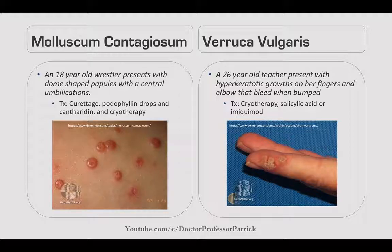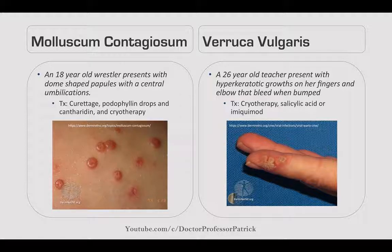Molluscum contagiosum: an 18-year-old wrestler presents with dome-shaped papules and central umbilications. Treat with curettage, podophyllin drops, and cryotherapy. Verruca vulgaris (warts): a 26-year-old teacher presents with hyperkeratotic growths on her fingers and elbows that bleed when bumped. Treat with cryotherapy, salicylic acid, or imiquimod.